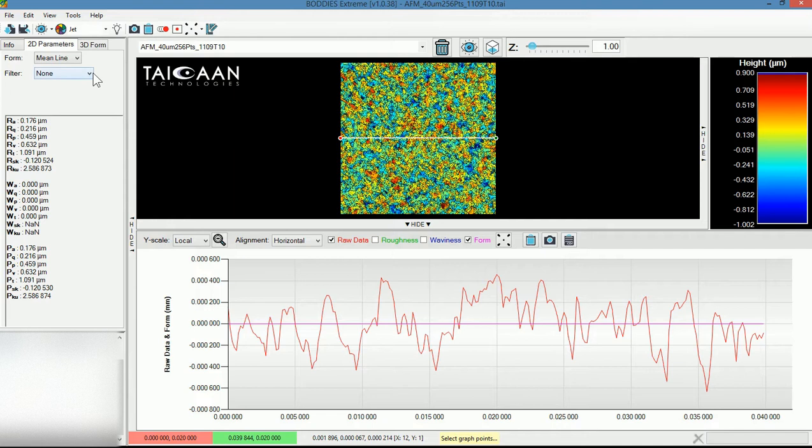It's very common in two-dimensional analysis that filters are used. They can be used for a number of different purposes to remove an underlying waviness in the surface, and the filter that's most commonly used is the Gaussian filter. You can see automatically we have a standard cutoff of 0.8 millimeters here.